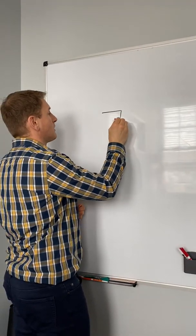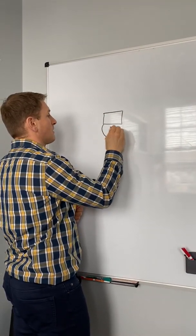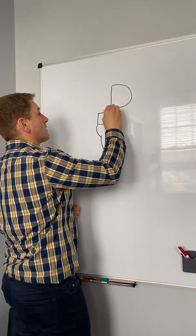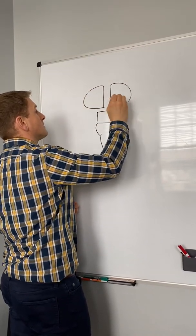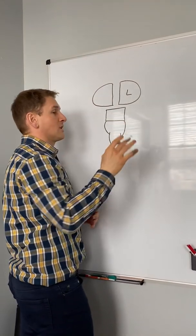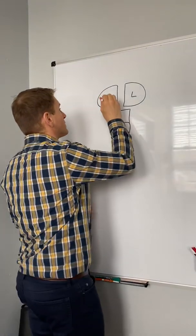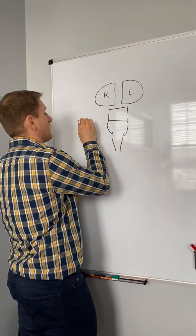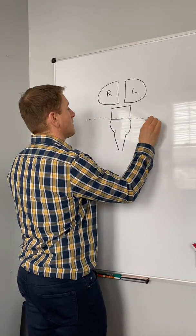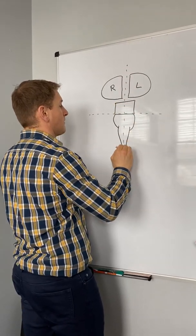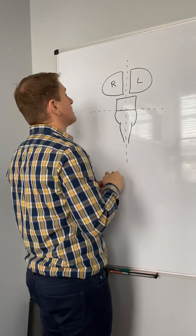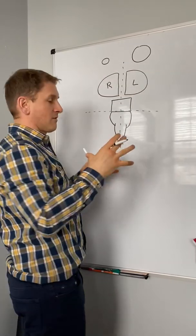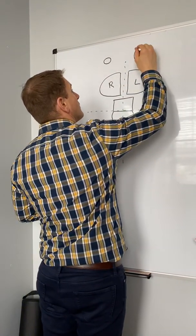Drawing out the mesencephalon — there's the pons, there's the medulla, here's the cortex. This is the left if you're looking at the patient, and here's the right. We're going to separate it right down the middle. Let's say we have a bigger pupil over here and a smaller pupil here — it doesn't necessarily look that differential, but just for the sake of doing it.